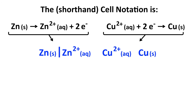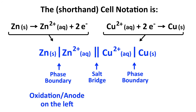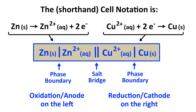When there is a phase difference — for example, a solid in contact with an aqueous species — we draw a vertical line to represent a phase boundary. So zinc solid and zinc 2+ aqueous are separated by a vertical line, and copper 2+ aqueous and copper solid are also separated by a vertical line. The two half-cells are then separated by a double vertical line representing the salt bridge. The full cell notation reads: zinc solid | zinc 2+ aqueous || copper 2+ aqueous | copper solid. This is our shorthand convention, with oxidation at the anode written on the left and reduction at the cathode written on the right.